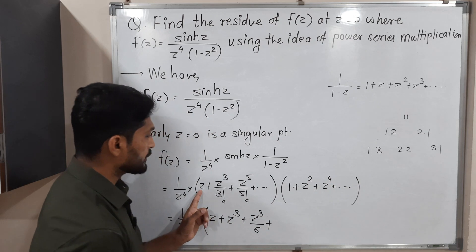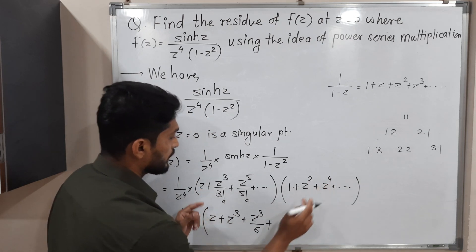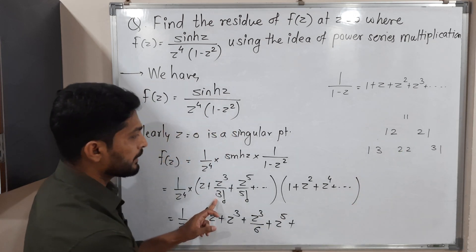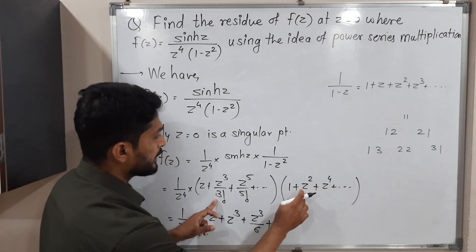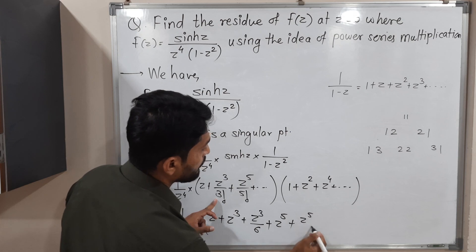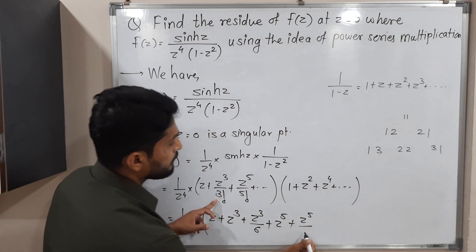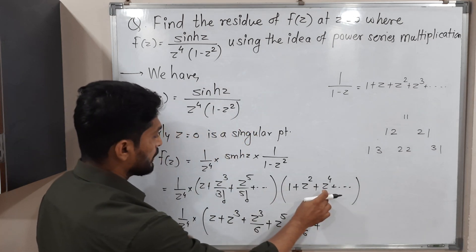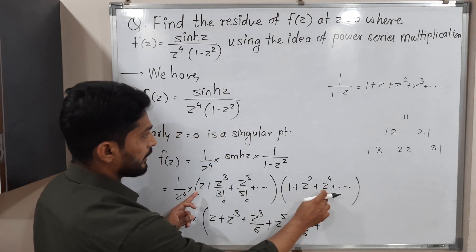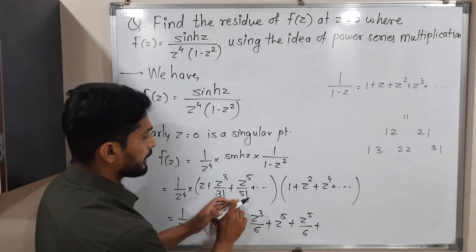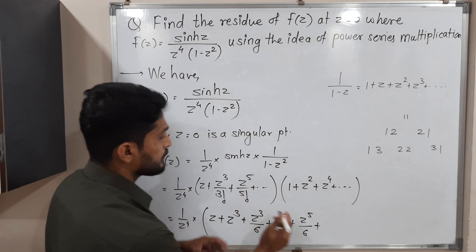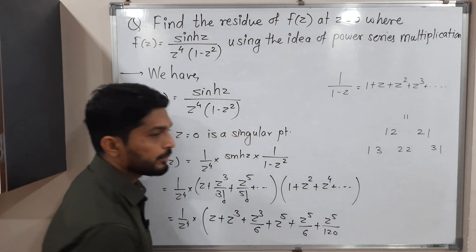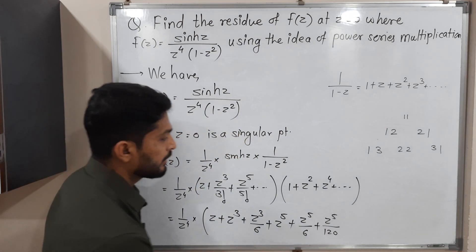Next, term 1 × term 3 gives z⁵. Then term 2 × term 2 gives z³ times z² = z⁵ over 6. Then term 3 × term 1: 1 times z⁵ over 5 factorial, where 5 factorial is 5×4×3×2×1 = 120, giving z⁵ over 120.